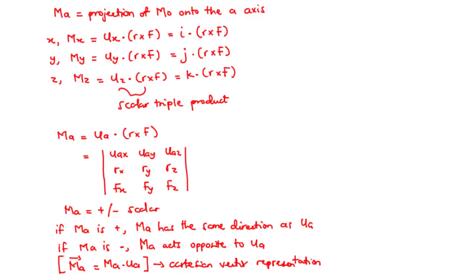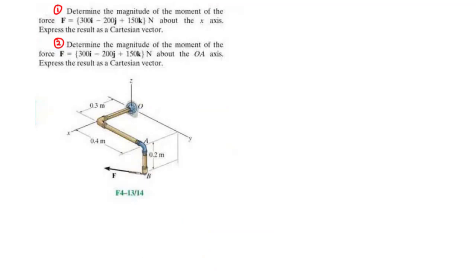Having this information, let's try a few examples. For question 1, determine the magnitude of the moment of the force F about the X axis and express the result as a Cartesian vector. For question 2, we are also going to determine the magnitude of the moment of the same force F, this time about the OA axis, and express the result as a Cartesian vector.